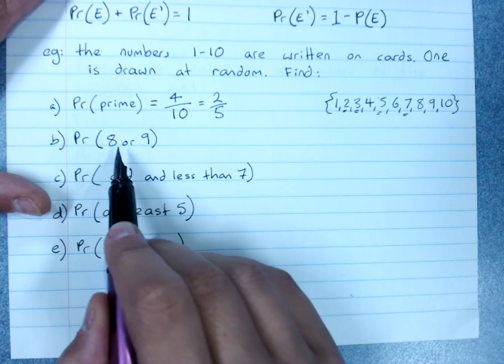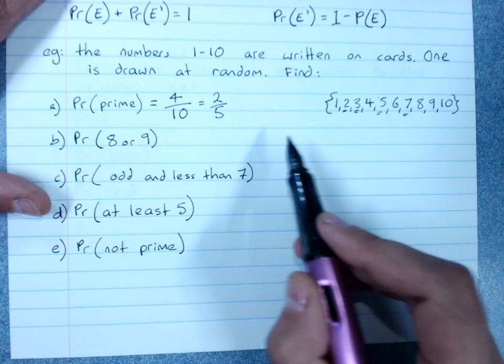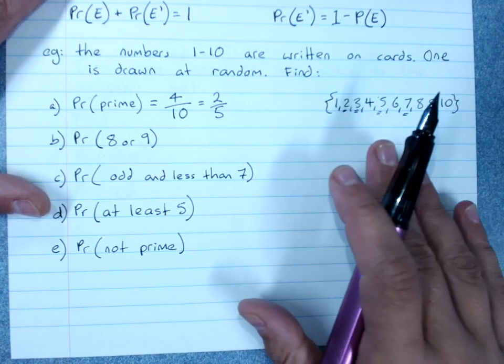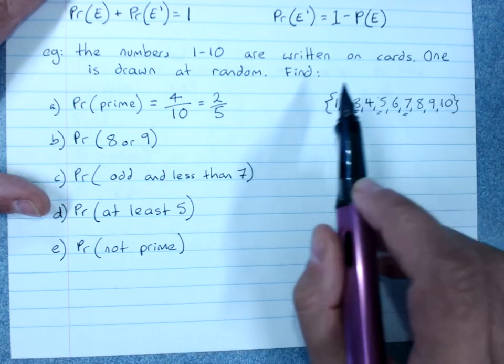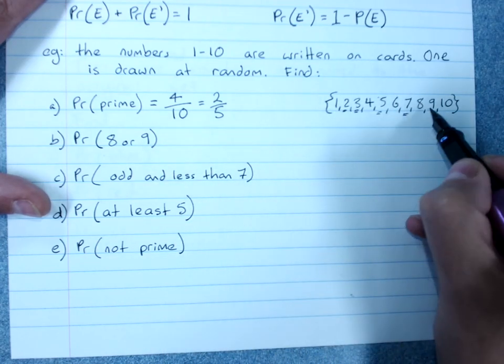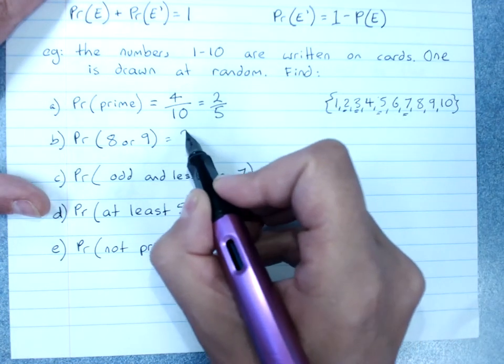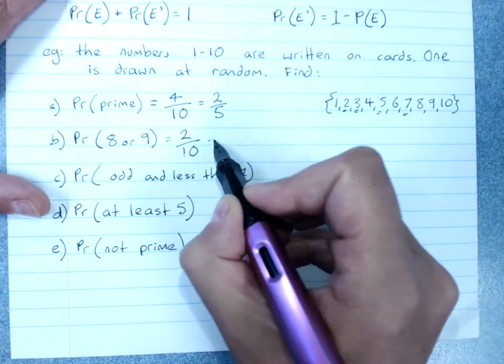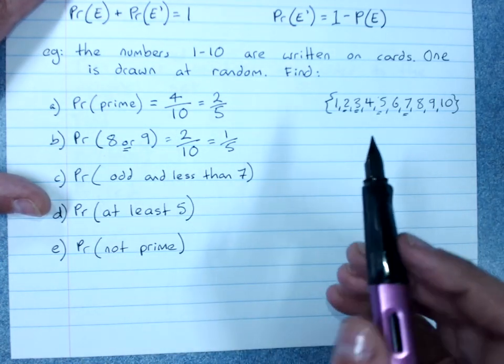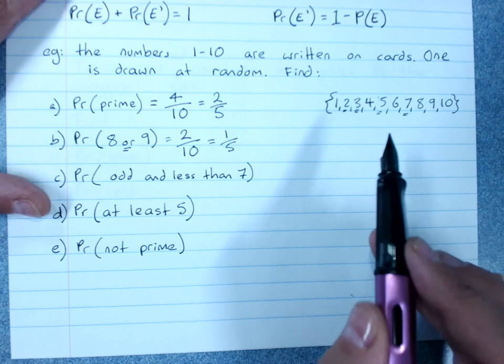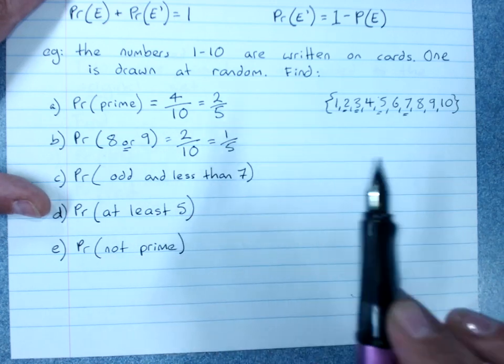The probability of getting an 8 or a 9. Basically, I will be happy, I will win the game, whatever it is, if I get an 8 or a 9. So how many of the outcomes satisfy that event? This one and this one. That's 2 out of 10 or 1 out of 5. Now notice that was OR. Either an 8 or a 9 would make me happy, would satisfy the event.